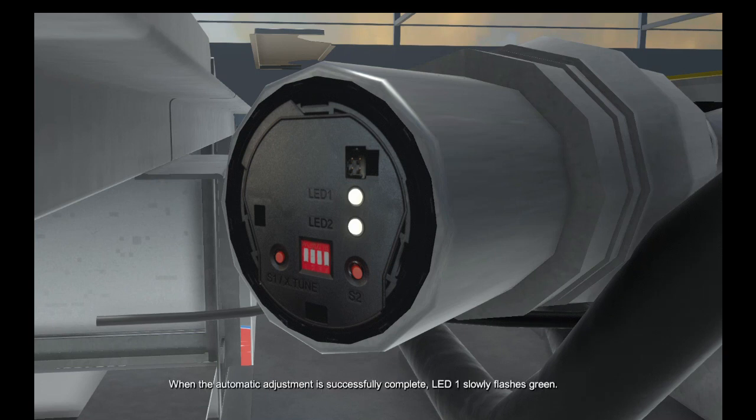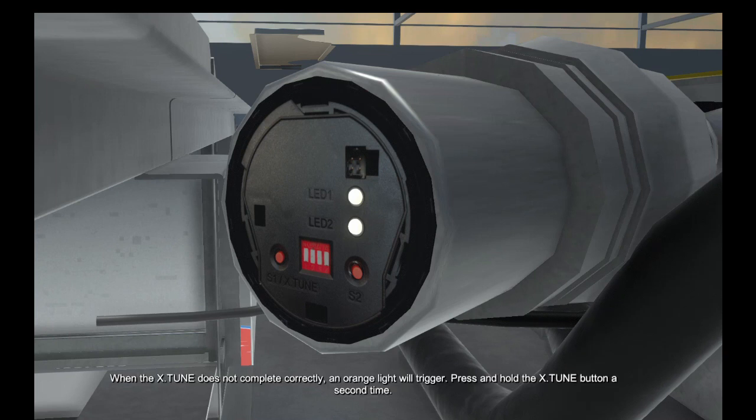When the automatic adjustment is successfully complete, LED-1 slowly flashes green. When the X-Tune does not complete correctly, an orange light will trigger. Press and hold the X-Tune button a second time.